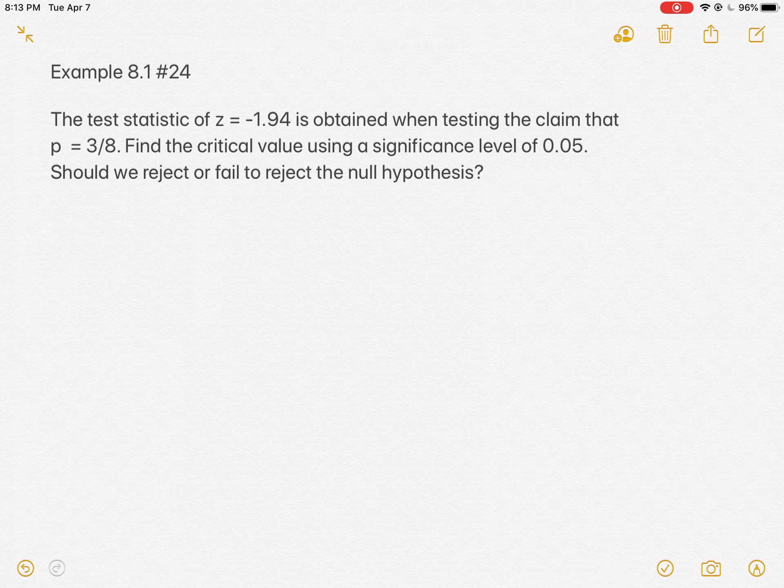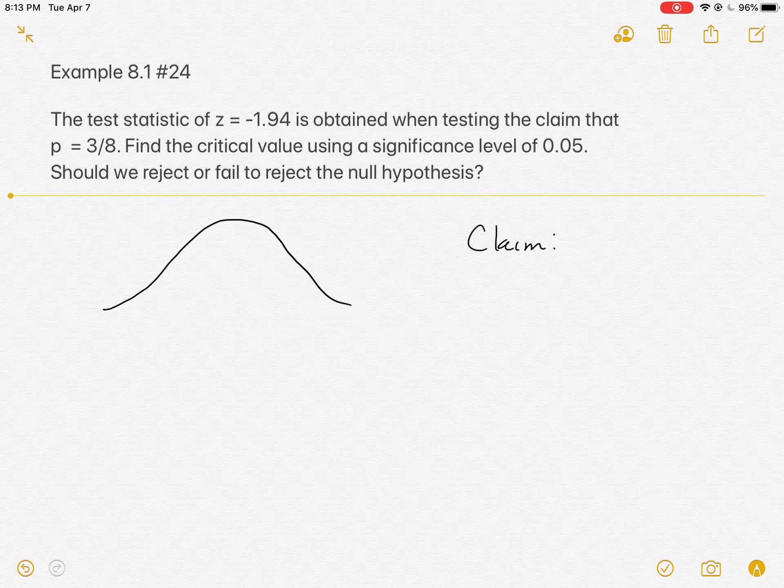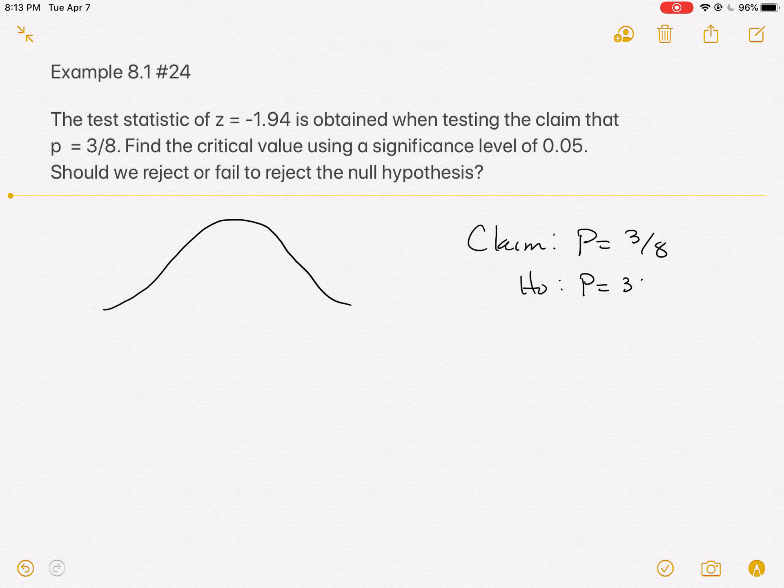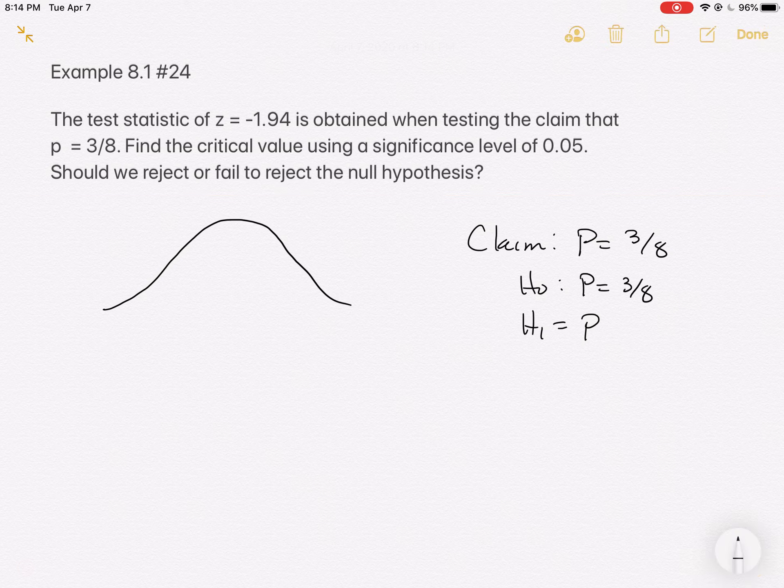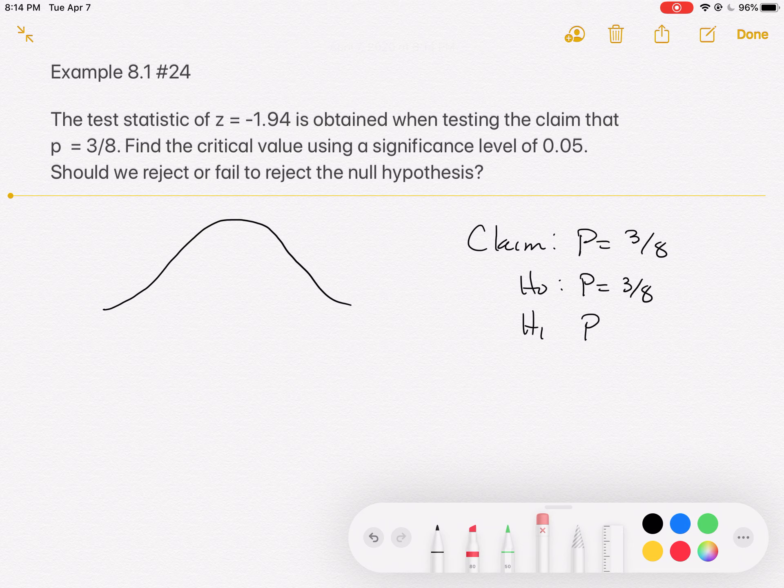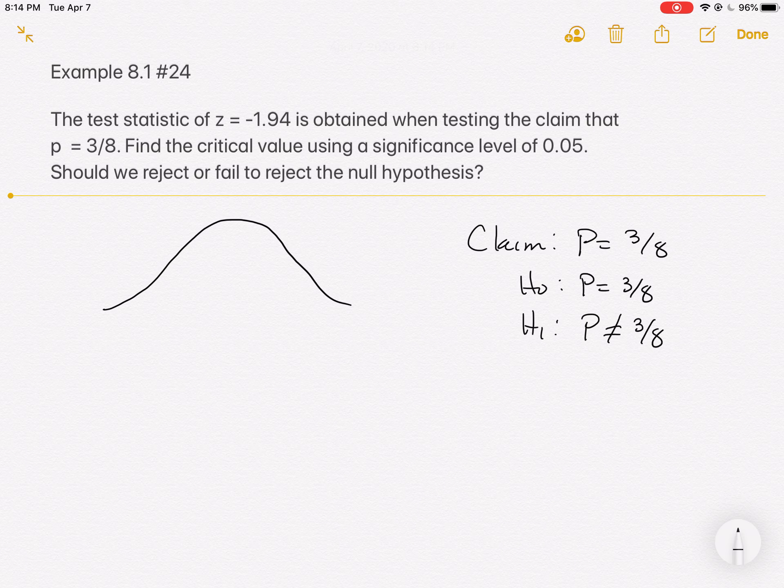To do the critical value, we're going to draw a picture. We're going to look at our claim, which is P equals 3/8. Our null hypothesis, which is also P equals 3/8. And our alternate hypothesis, which in this case, remember our alternate hypothesis can only have a strict inequality symbol. So it's not allowed to be the claim this time, and so it's going to be the opposite of the claim, or not equal to 3/8.